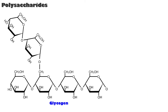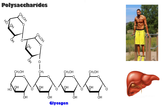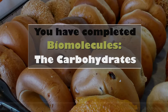Glycogen is the carbohydrate storage molecule found in muscle and liver cells. When blood sugar drops, liver cells hydrolyze glycogen and release glucose to the blood. Congratulations! You've completed biomolecules: the carbohydrates.